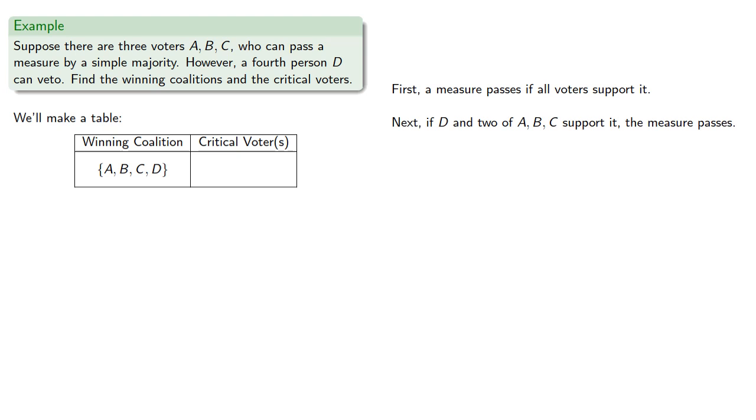Next, if D and two of A, B, and C support it, the measure passes. So those are the coalitions A, B, and D; A, C, and D; and B, C, and D.